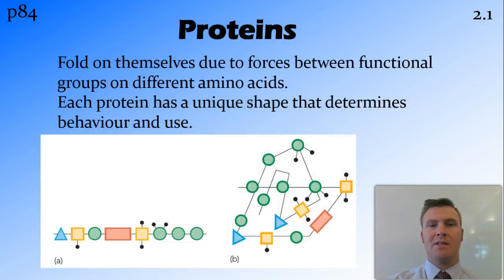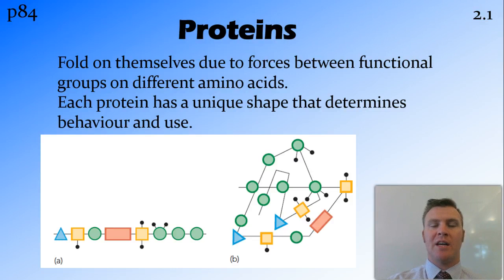Each amino acid has a particular shape and particular functional groups hanging off it. Because of the functional groups on this long chain of amino acids and the way they fit with each other, each of these thousands of proteins has a unique shape, and that determines its behaviour and how the body uses it.